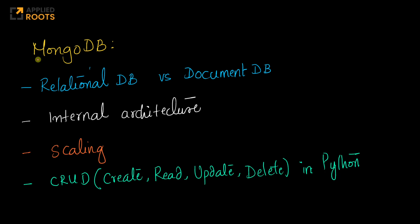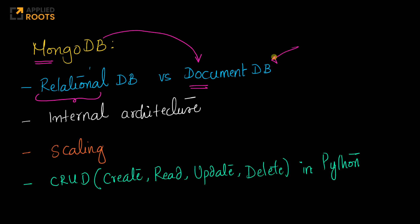In this live session, we will first try to understand the difference between a relational database and a document-oriented database, because MongoDB broadly comes under the category of document databases. We'll cover when you should use a relational database versus a document database, in which situations a document database is more popular, and the pros and cons of each.